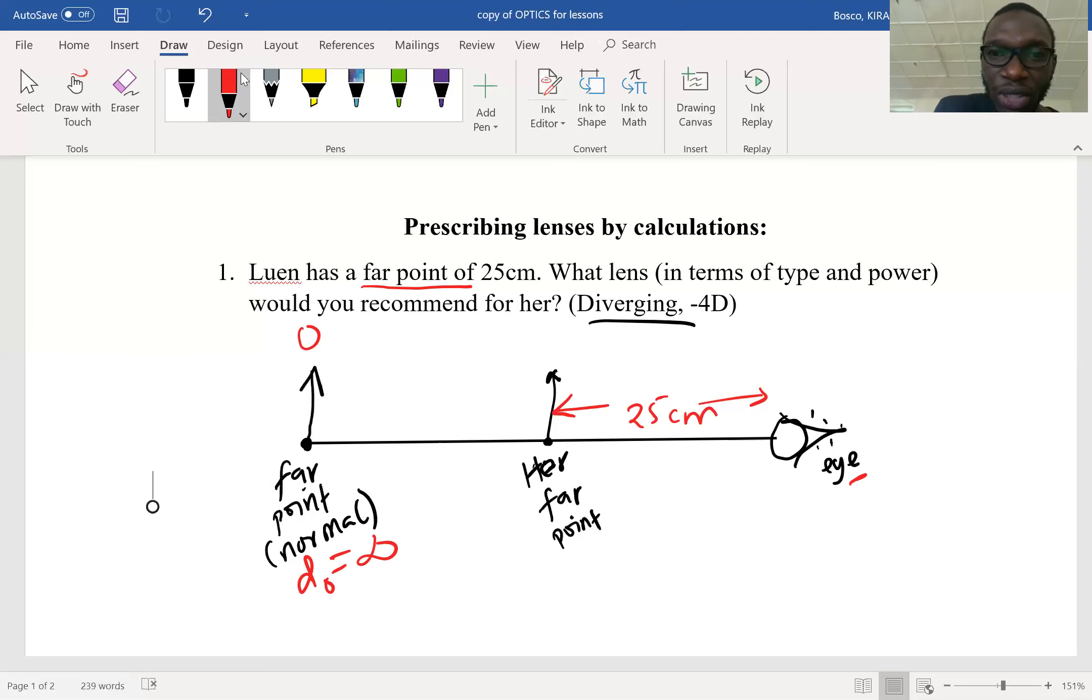We bring the image here at the far point of this lady. Meaning that if you look at the diagram, the image and the object are on the same side, and therefore we shall put the lens somewhere here.